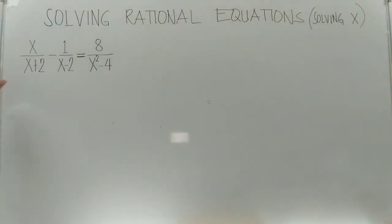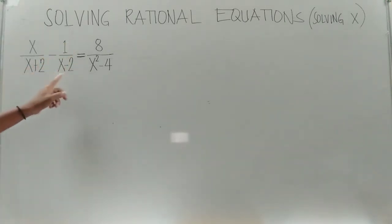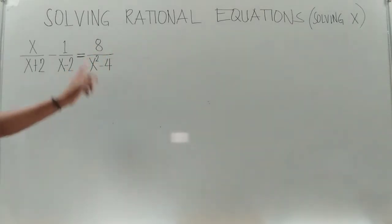We have here on the board your equation: x over (x plus 2) minus 1 over (x minus 2) equals 8 over (x squared minus 4).